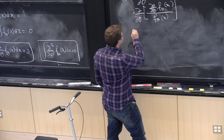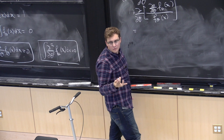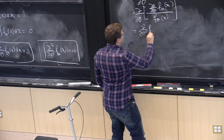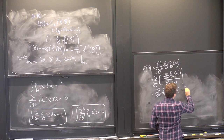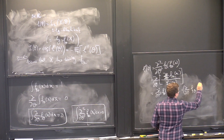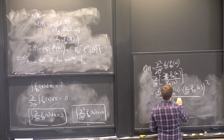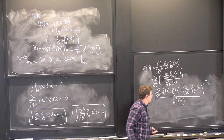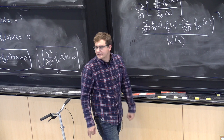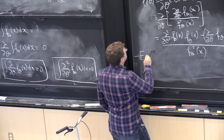Now I need to take another derivative of this ratio. Using the quotient rule, I pick up the second derivative times f theta minus the first derivative squared, divided by f theta squared. That's basic calculus.